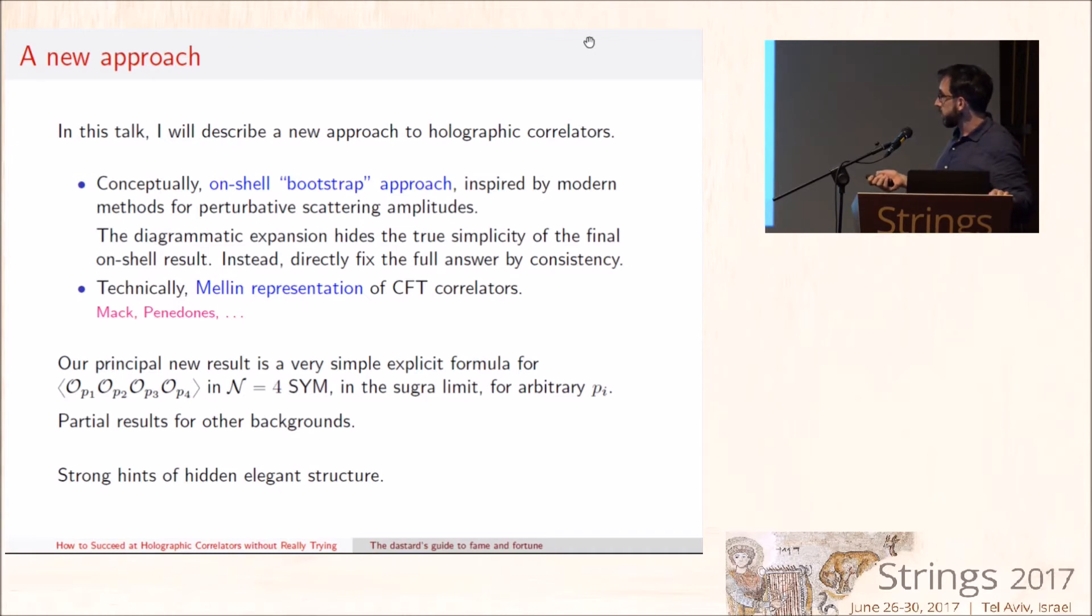Our main result will be an extremely simple, strikingly simple complete answer for the four-point function for arbitrary weights, which translates to arbitrarily Kaluza-Klein levels on the supergravity side, in the classical supergravity limit, in the case of N=4 super Yang-Mills. I will also mention some other partial results. And indeed, we are finding that things are much simpler than previously anticipated.